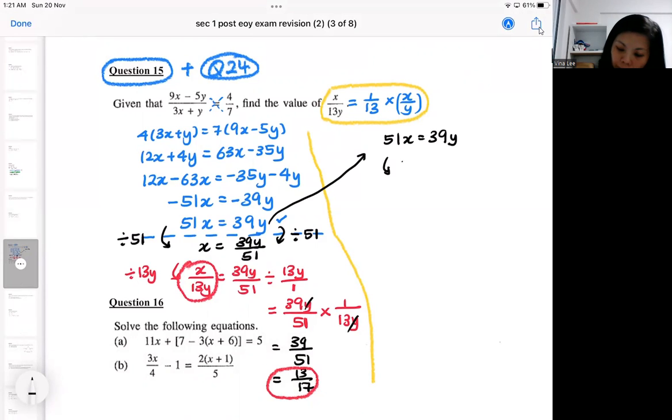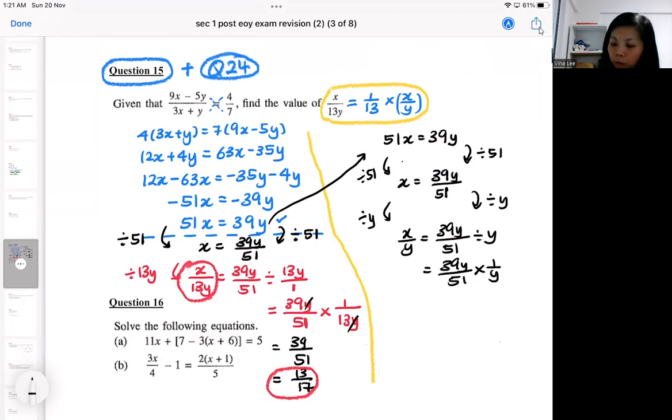So I'm still going to divide by 51. Then I'm going to divide by Y. So you reciprocal this one. So you're dividing by this, so you reciprocal. So you will get to cancel.